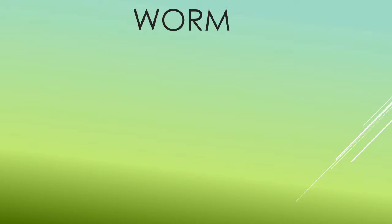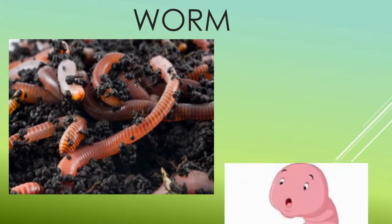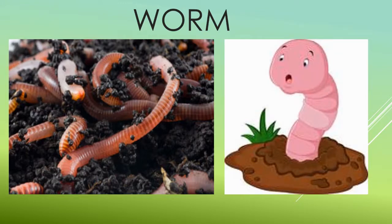Let us discuss the viewpoint of this little small creature. As you can see on the slide, there is a worm. Worms are many different distinctly related animals that typically have a long cylindrical, tube-like body with no limbs and no eyes. Worms vary in size from microscopic to over one meter in length. Free-living worm species do not live on land but instead live in a variety of fresh water environments or underground by burrowing.